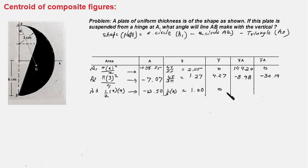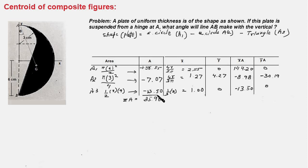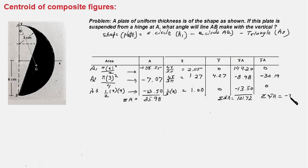So x̄·A for A3 = −13.50 and ȳ·A = 0. Now we take the totals: ΣA = 35.98, Σx̄A = 121.72, and Σȳ A = −30.19.